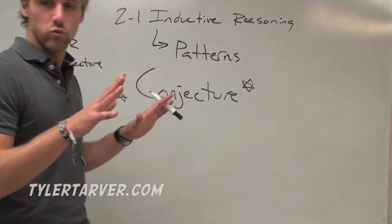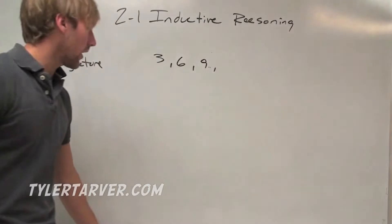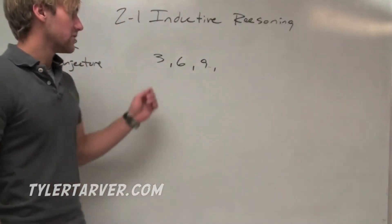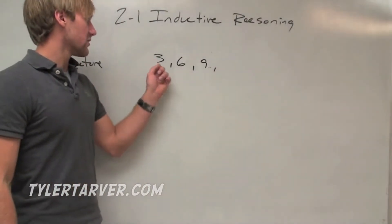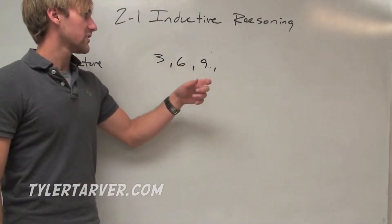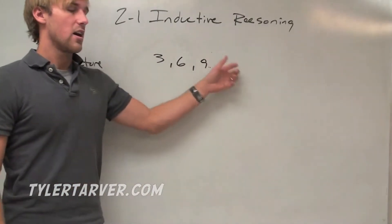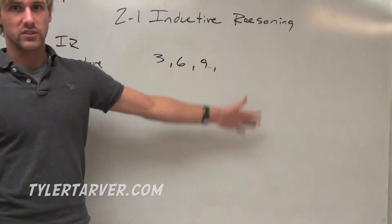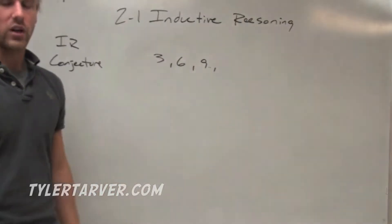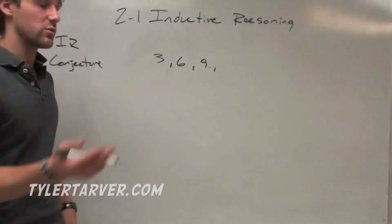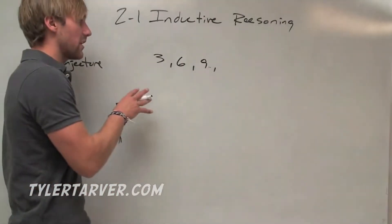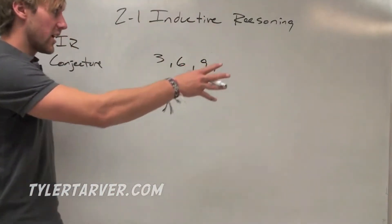Let's look at some examples. Say that you're given the sequence: 3, 6, 9, and you have to find what's next. We're going to use inductive reasoning because we're going to look at what's happening to find out what's going to happen.